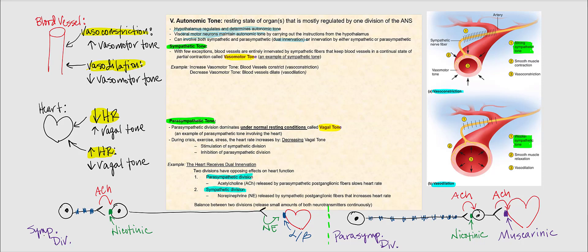Let's begin by looking at sympathetic tone. With few exceptions, our blood vessels are almost entirely innervated by the sympathetic division — the sympathetic fibers that will keep our blood vessels in a continual state of partial contraction. That is referred to as vasomotor tone, which is an example of sympathetic tone. If we have increased vasomotor tone, the result is vasoconstriction, meaning the diameter of the lumen of this blood vessel narrows.